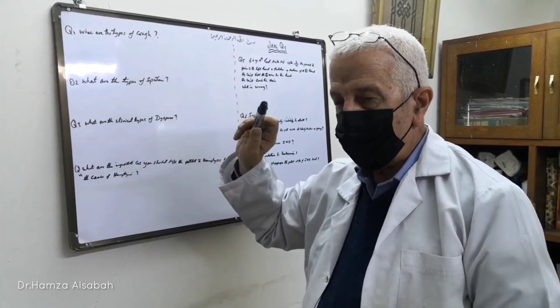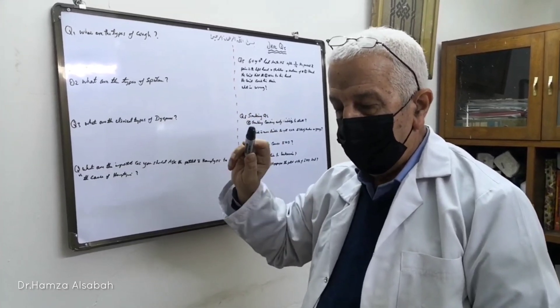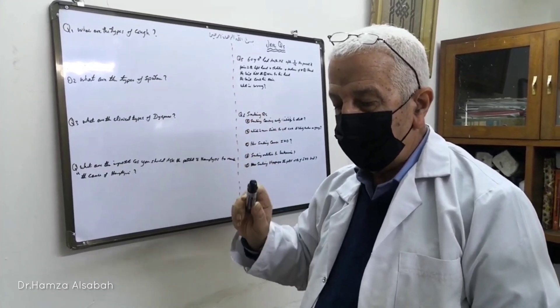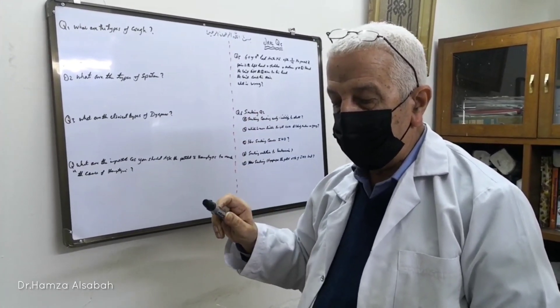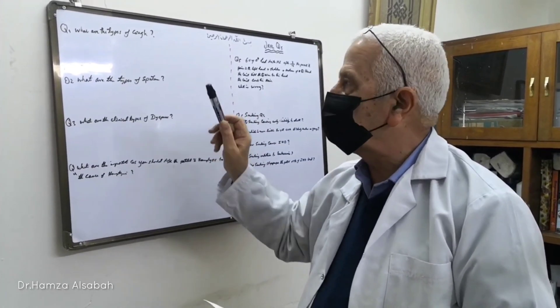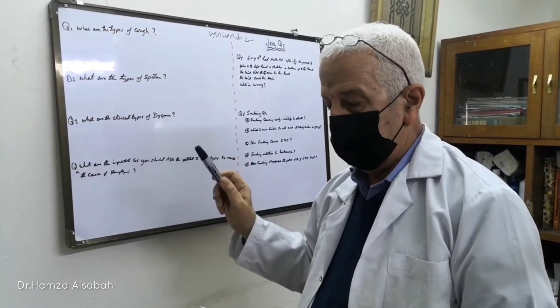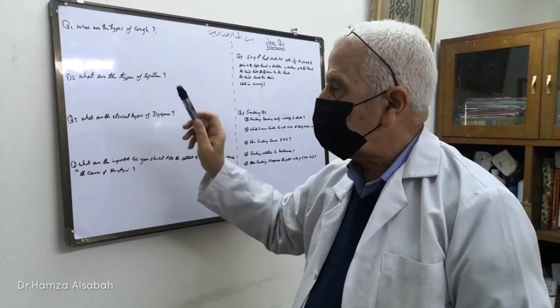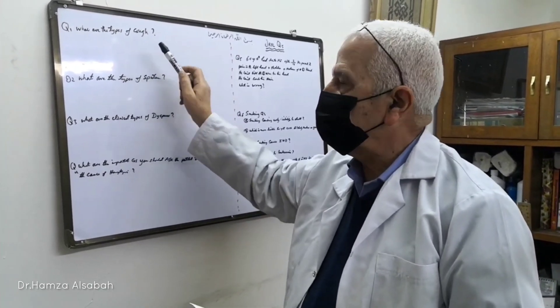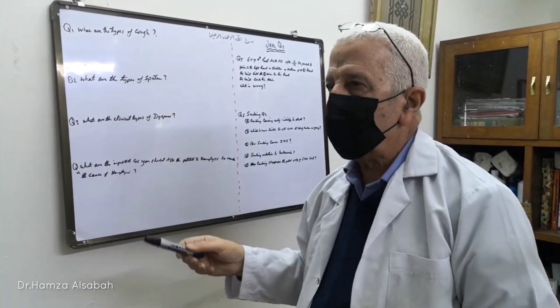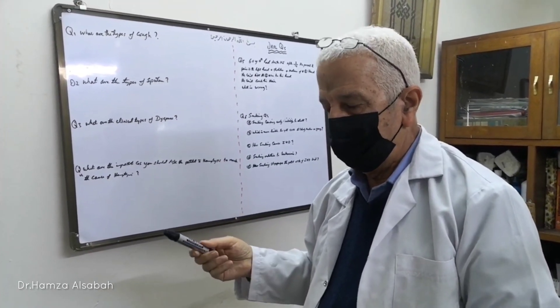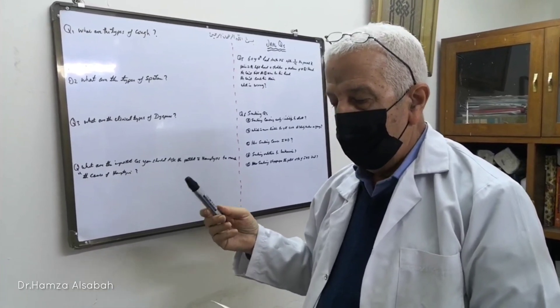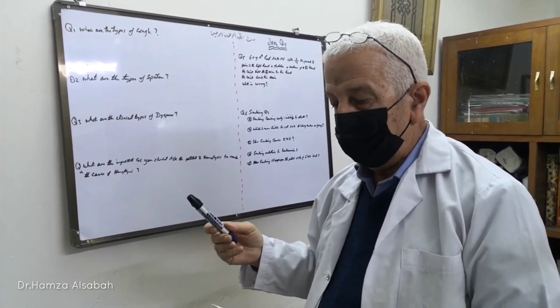The third type of cough is cough with shortness of breath at the end of the day. This is occupational asthma, seen in those working with cotton.